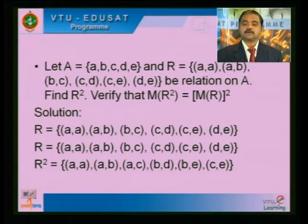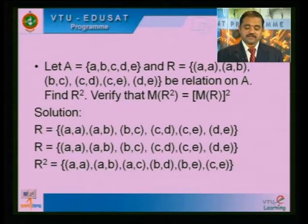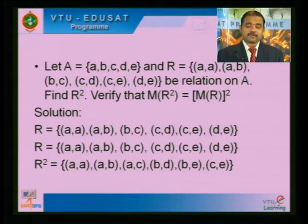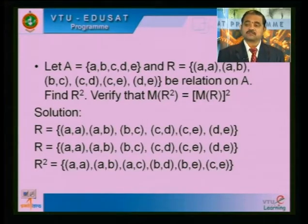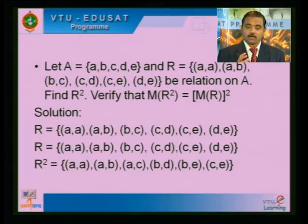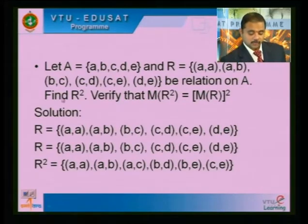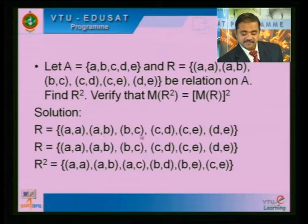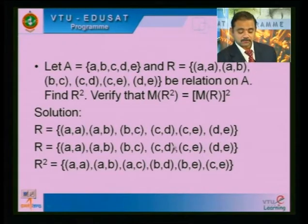Now, in the matrices of the relation, let A = {A, B, C, D, E} and R is the relation {(A,A), (A,B), (B,C), (C,D), (C,E), (D,E)} — a relation on capital A. Find R square, and verify that M(R square) equals M(R) whole square. M(R square) is the matrix of relation R square; M(R) whole square is the matrix of R multiplied twice.